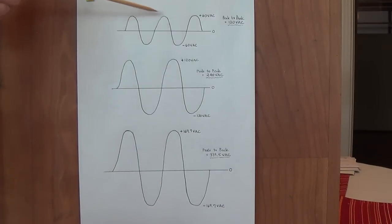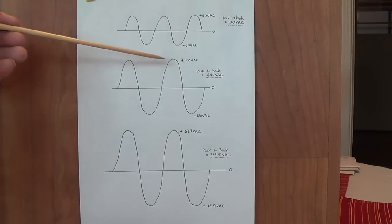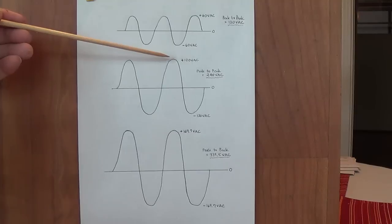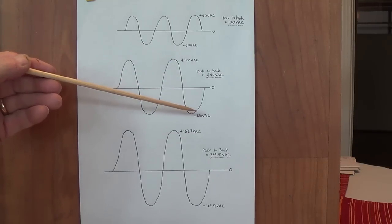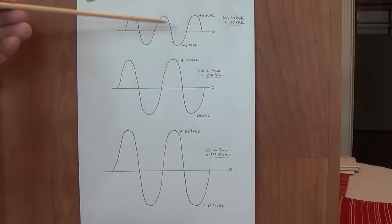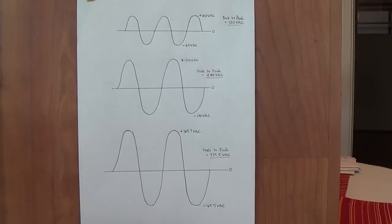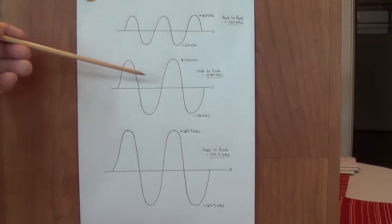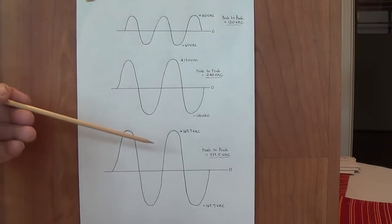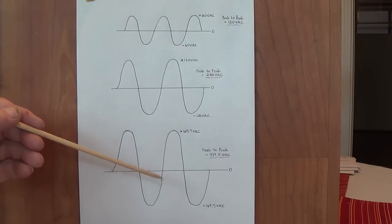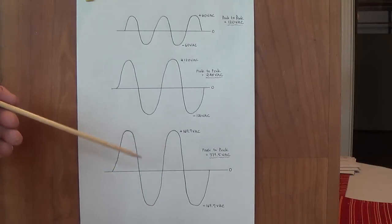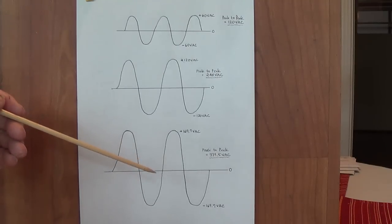Up here at the top I have the way I showed it in the video. Plus 60 volts AC, minus 60 volts AC. This would be closer to the truth. Plus 120 volts AC here, minus 120 volts AC here. And the peak to peak is not 120 volts as I showed in the video, but 240 volts in this particular graph. But even this graph is really not correct. And the reality is going to be quite alien to a bunch of you.